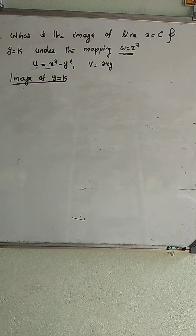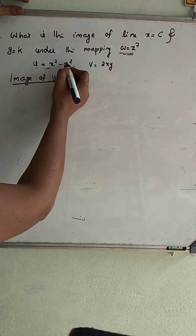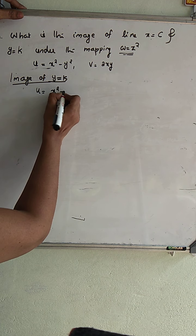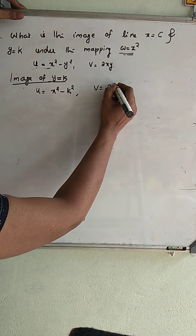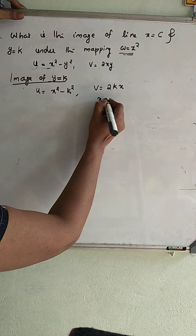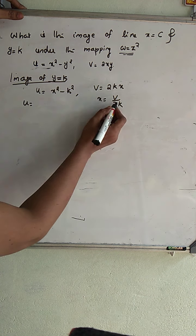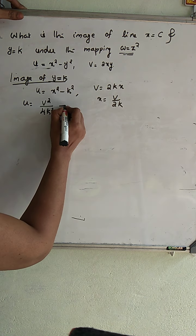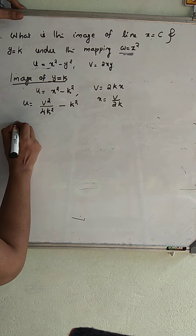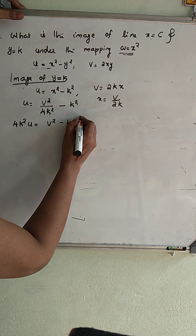Now let us find the image of the horizontal line Y equal to K. Following the same procedure, we substitute Y equal to K into U and V, giving U equal to X square minus K square and V equal to 2KX. From here we get X equal to V divided by 2K.